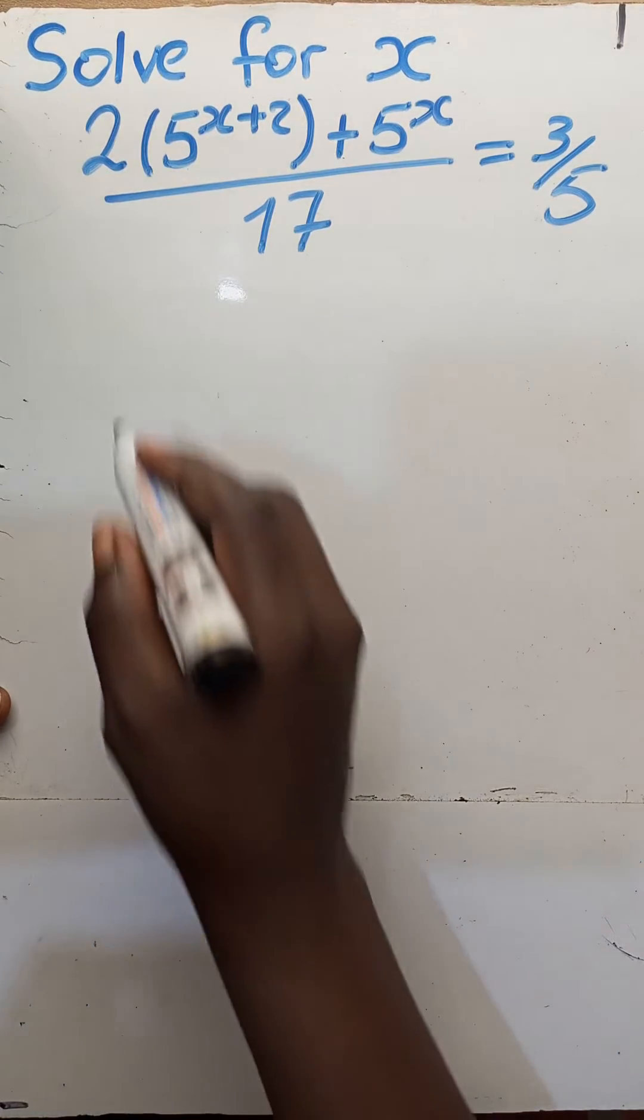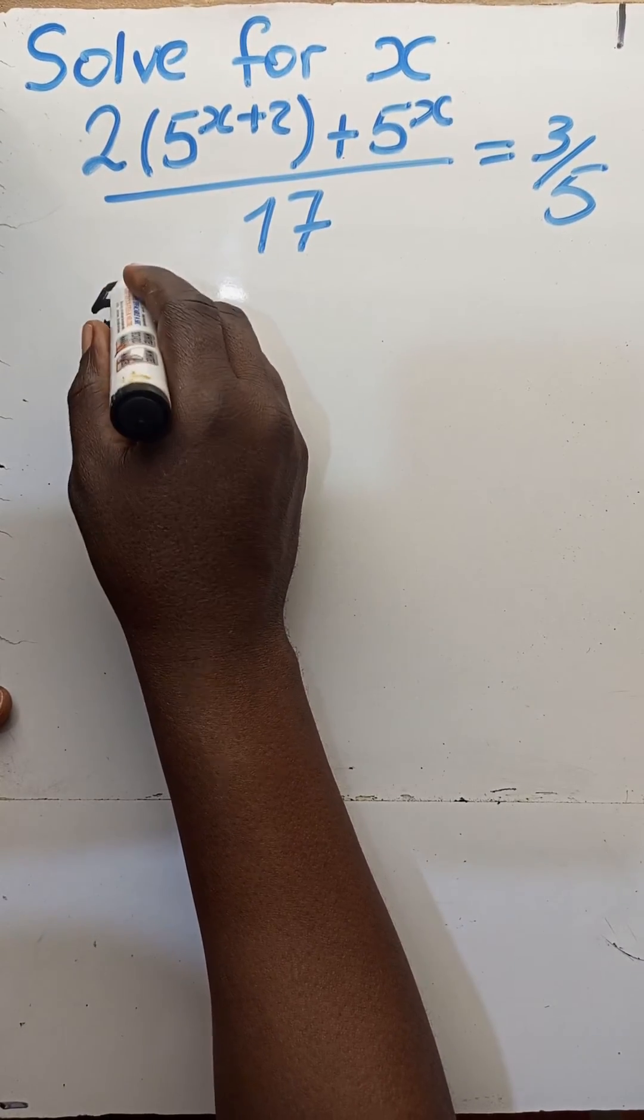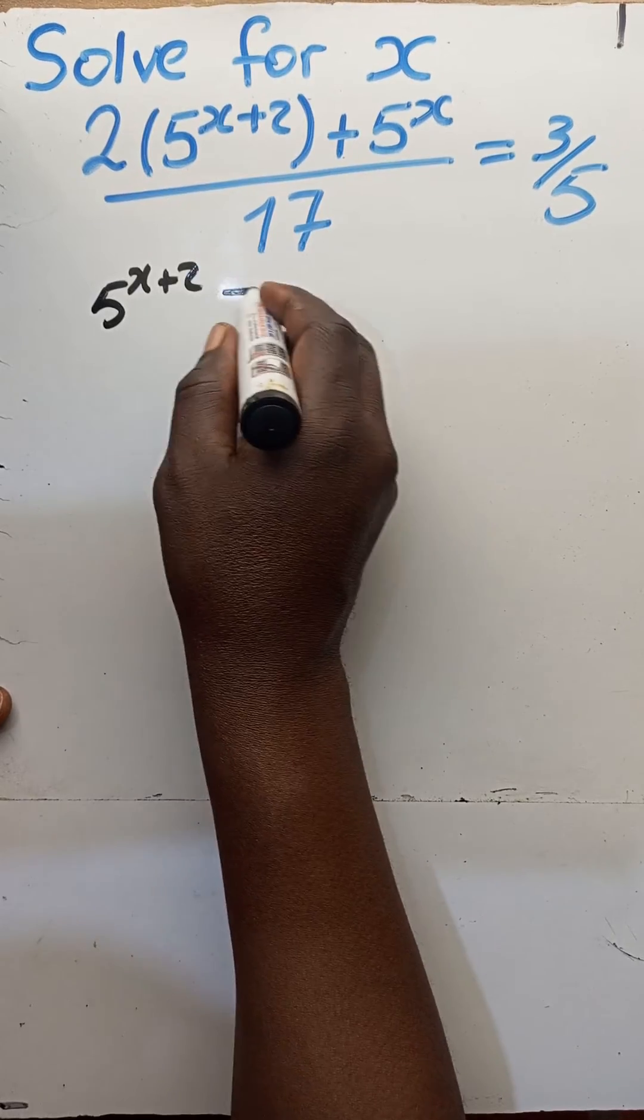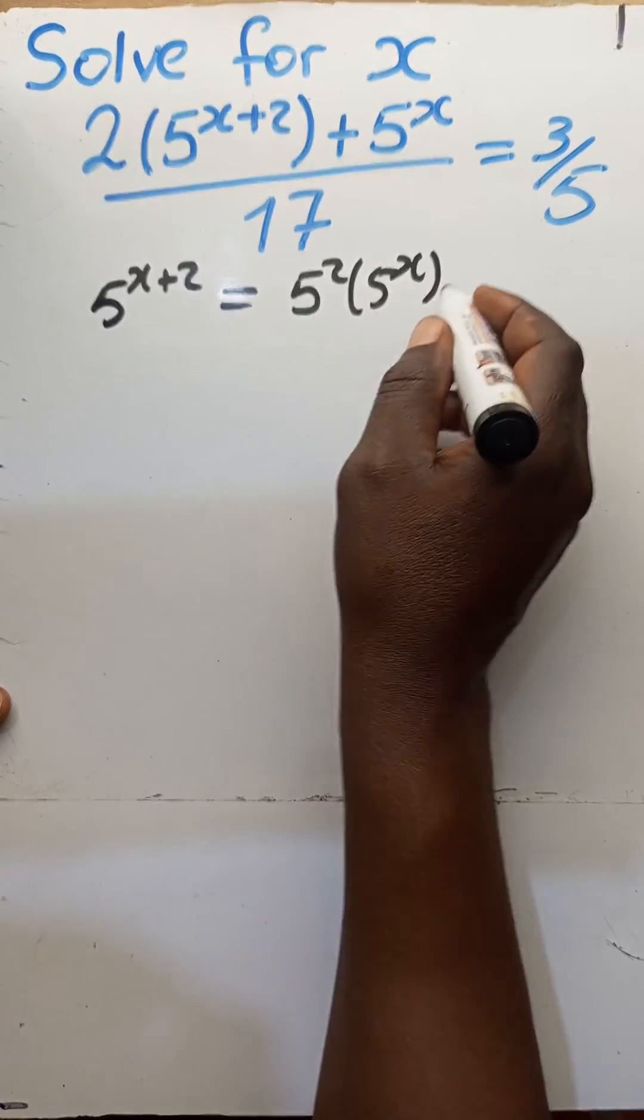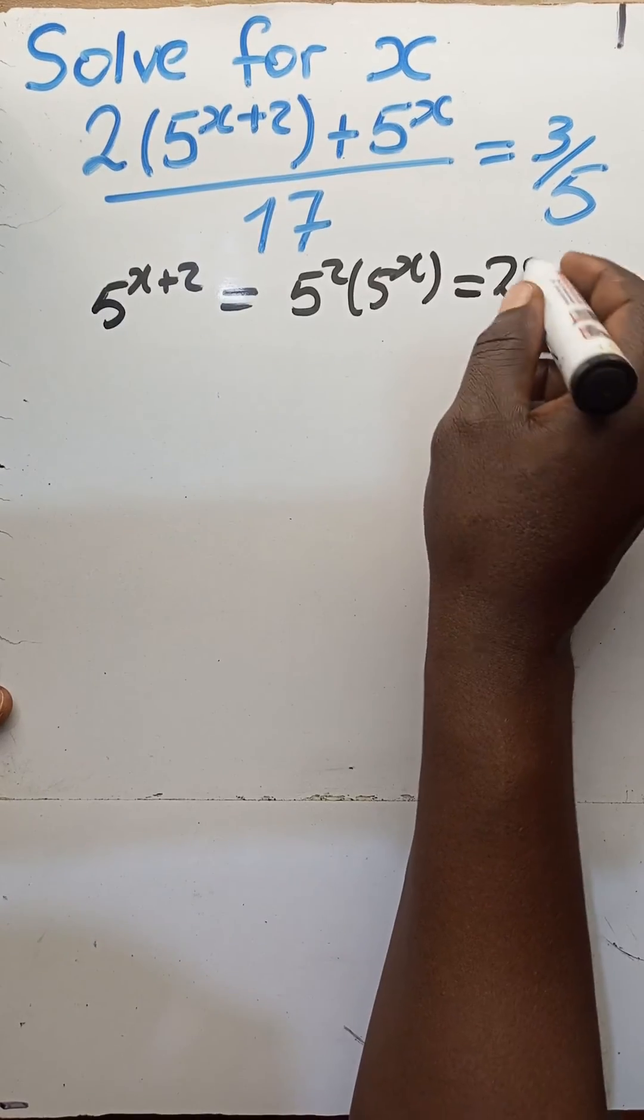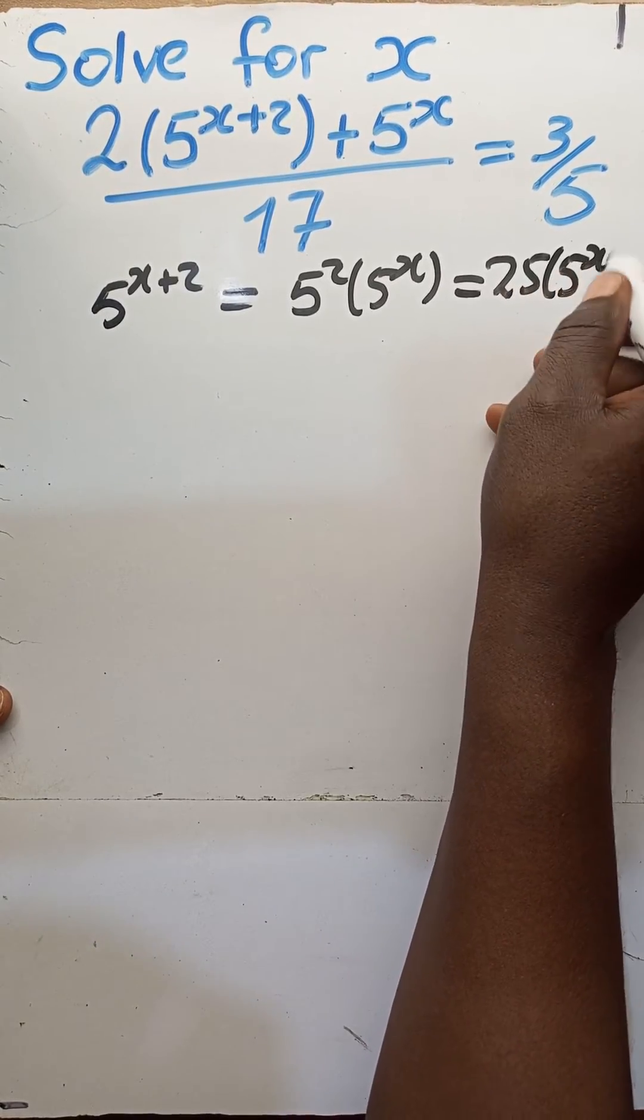Hi, let's solve for x in this question real quick. 5 to the x plus 2 is the same as 5 squared times 5 to the x, which is the same as 25 times 5 to the x.